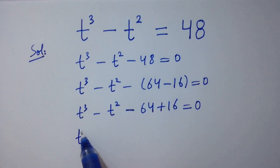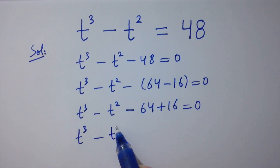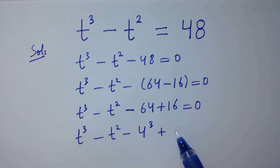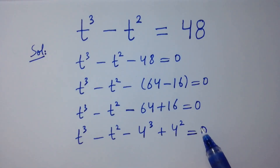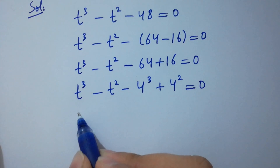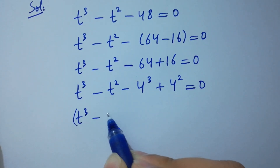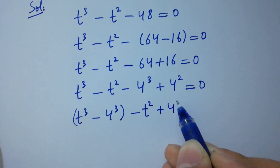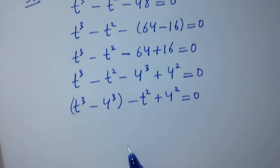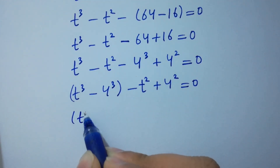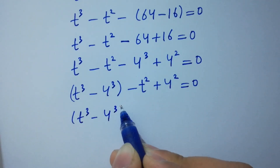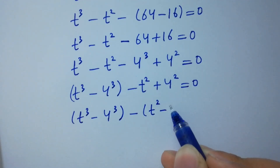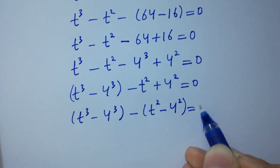Simplify this: t³ - t² - 64 + 16 = 0. Here, t³ - 64 is t³ - 4³, and +16 is +4². So we rewrite as t³ - 4³ - t² + 4² = 0, taking -4³ common and then t² with minus, we have - t² + 4² = 0.